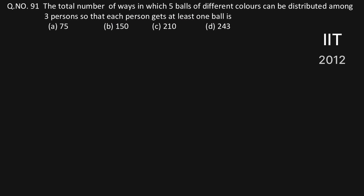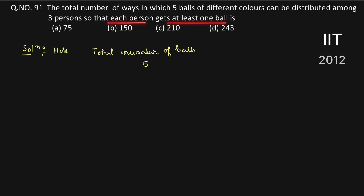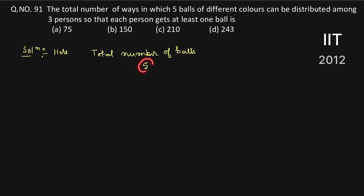Let's see the solution of this question. We have a total number of balls that is five. We distribute these five balls to three persons in such a way that each person gets at least one ball. So we consider two cases: case number one and case number two.